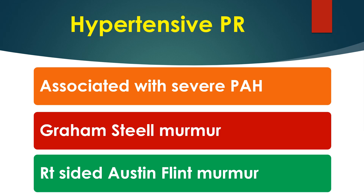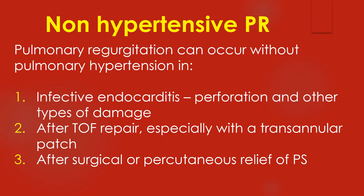A mid-diastolic and presystolic murmur known as the right-sided Austin Flint murmur may sometimes be associated. Pulmonary regurgitation can occur without pulmonary hypertension in: 1) infective endocarditis, due to perforation and other types of valve damage; and 2) after repair of Tetralogy of Fallot, especially with a transannular patch; and 3) after surgical or percutaneous relief of pulmonary stenosis.